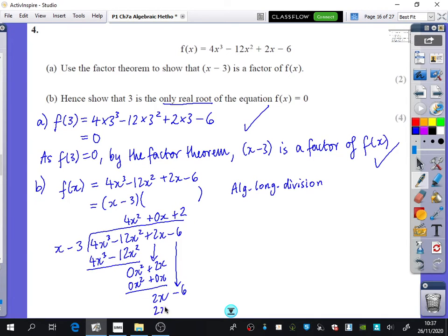And 2x minus 6 divided by x minus 3 is 2. And obviously when I then multiply by the 2, I get that there is no remainder.